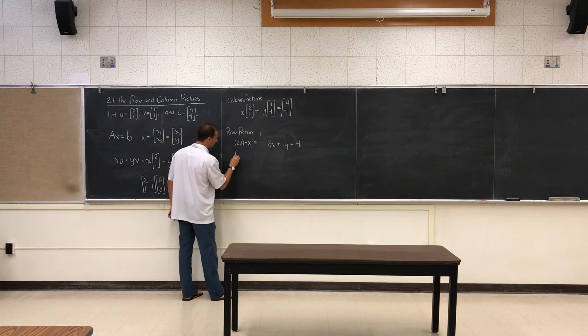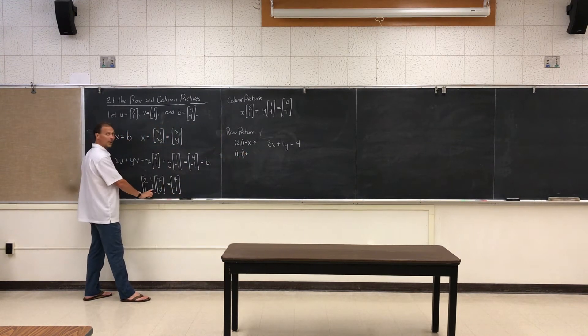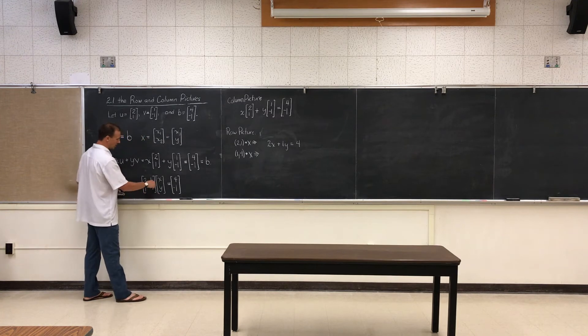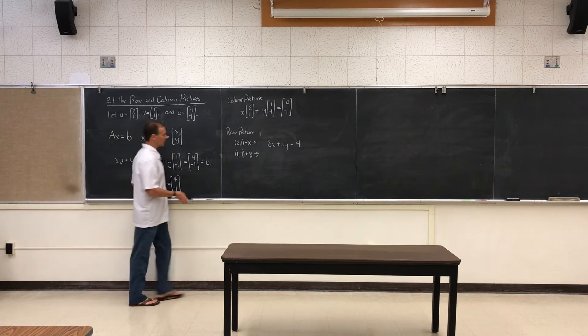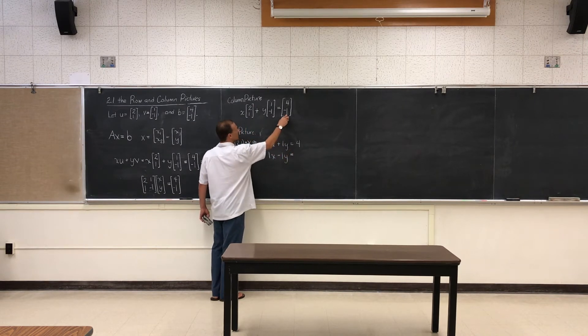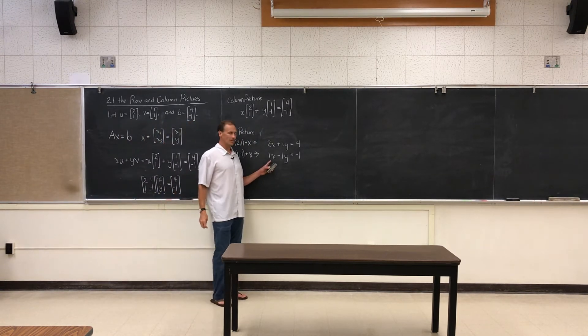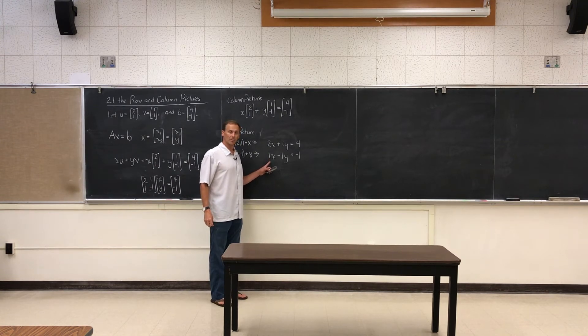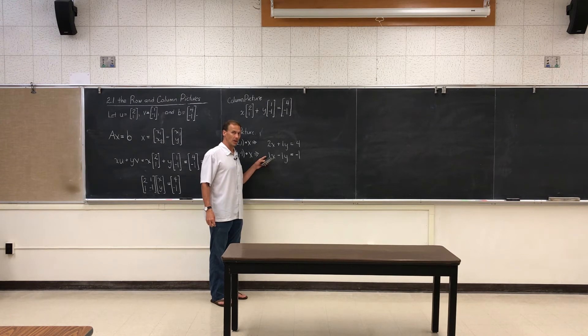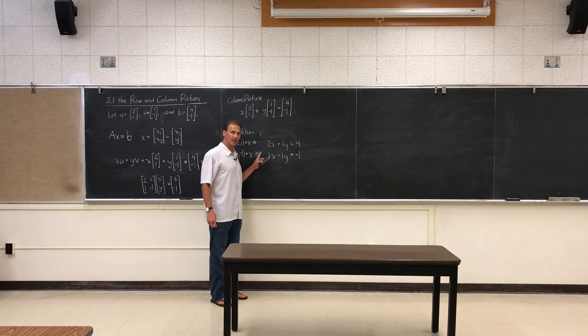And when I take my second row which is (1, -1), the second row of A, and I dot that with the vector X, I'm going to have 1X minus 1Y and that's going to equal the second component in B. That's the row picture. At this point in our mathematics, this is just a system of linear equations. We have two lines and the solution, if there is one, is where the intersection of these two lines. So let's take these two equations and graph them to see if we can find the solution by graphing.